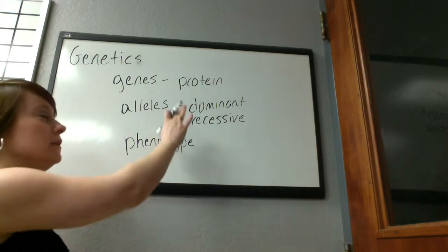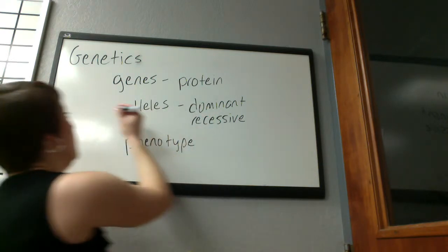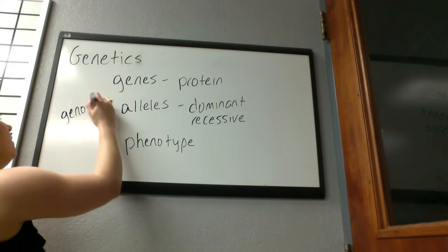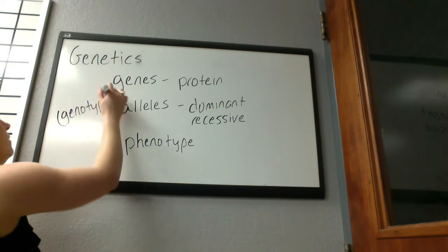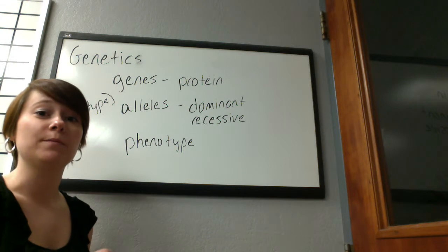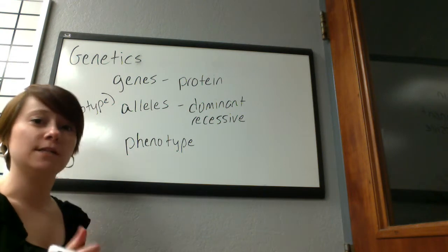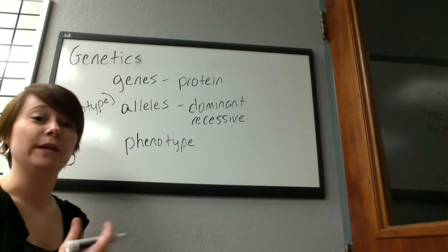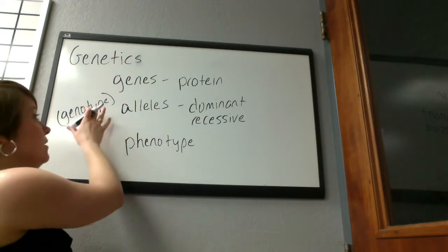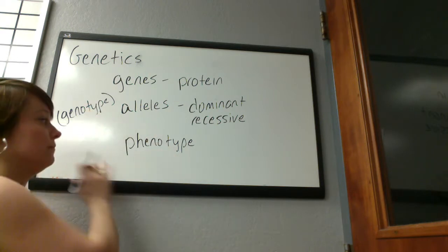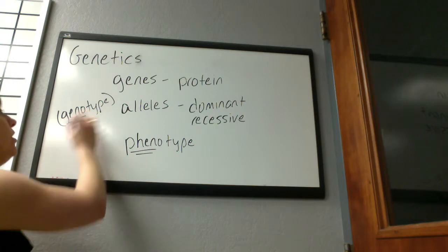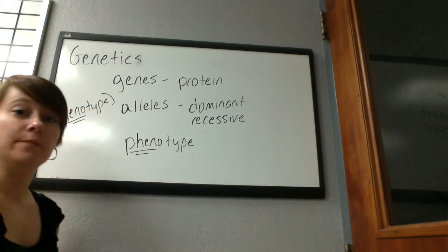All of the alleles that an individual has are termed the genotype of the individual. The genotype is the genetic makeup of the individual, and the phenotype is the physical manifestation of that genotype. So: pheno means physical manifestation, and geno — genotype — means genes.